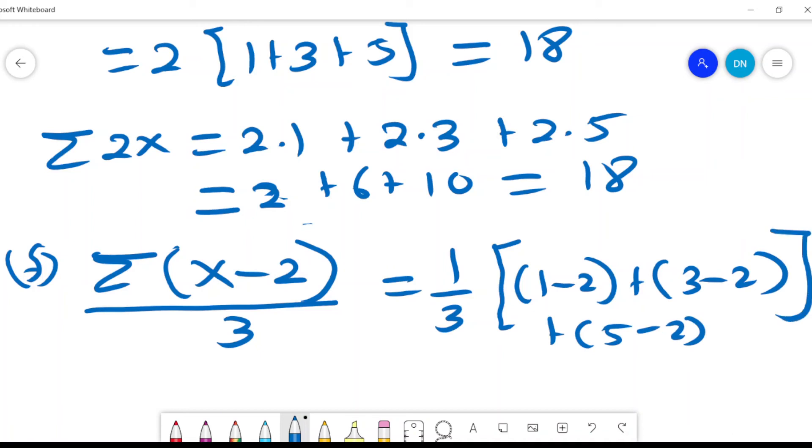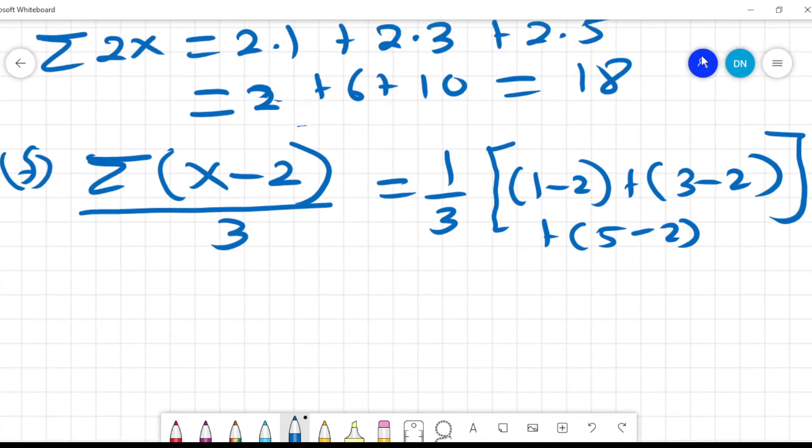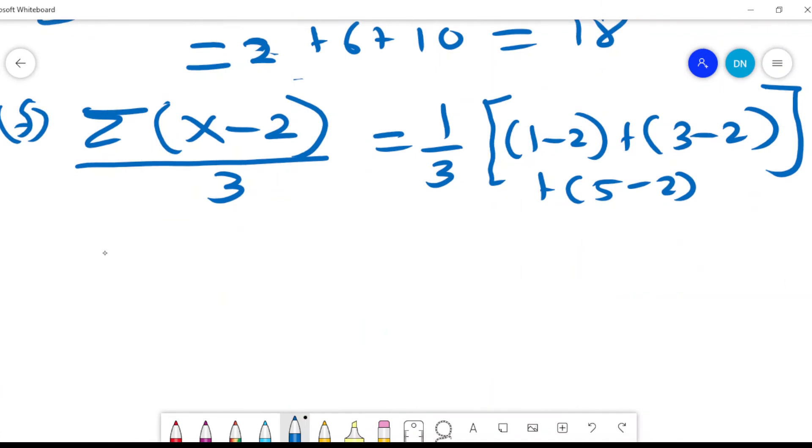1 minus 2 is negative 1, plus 1, plus 3, which will be 3, times one-third equals 1. So this should give you an idea of what we mean when we say we are using the summation sign.